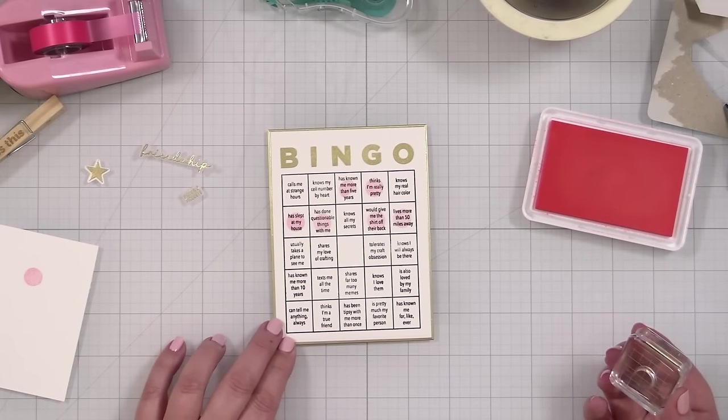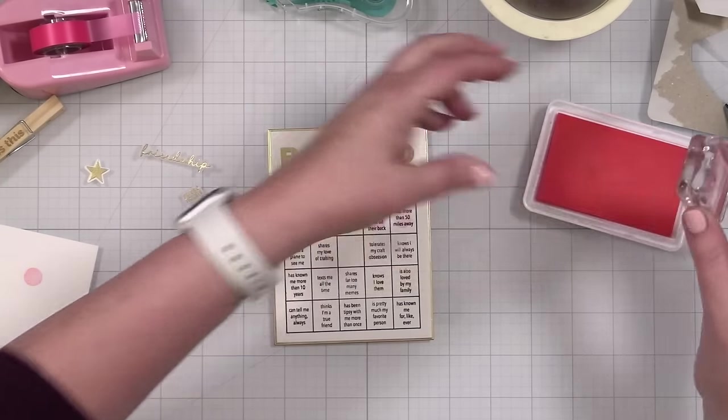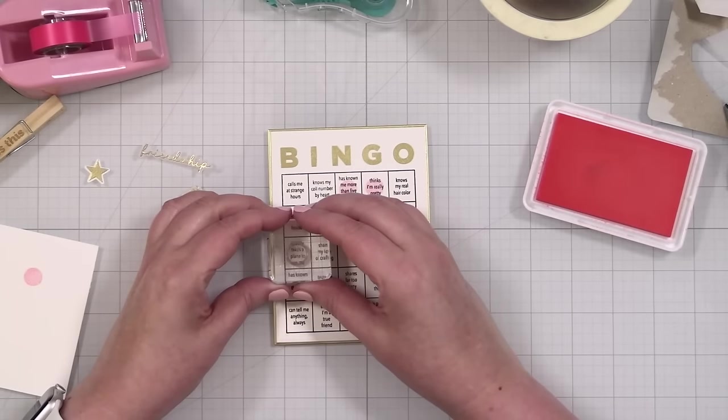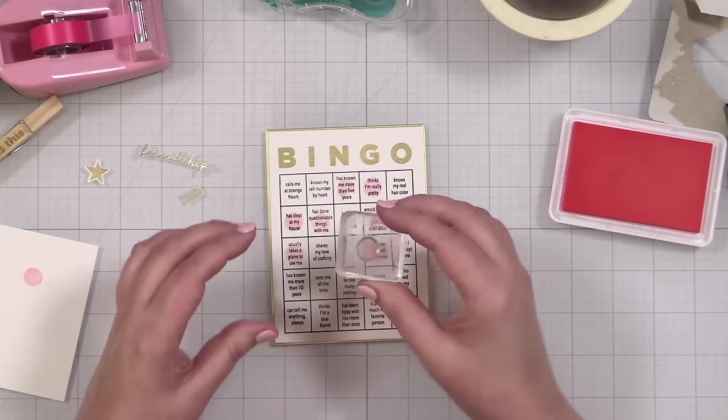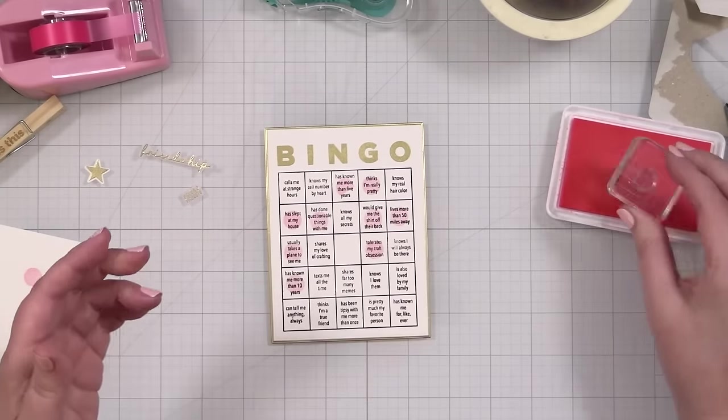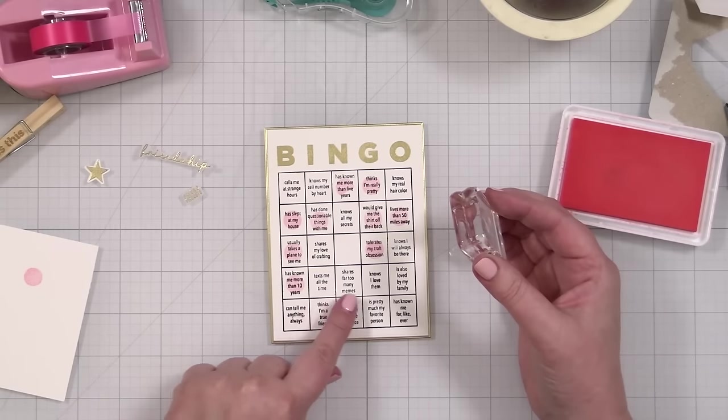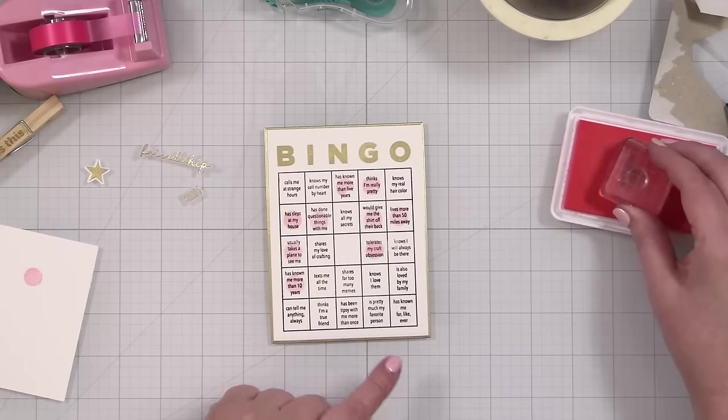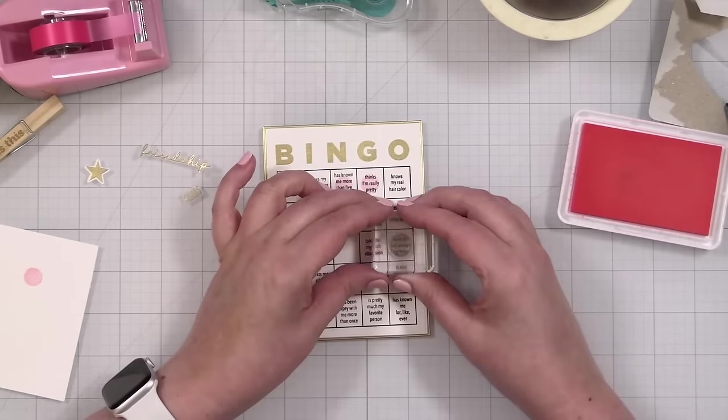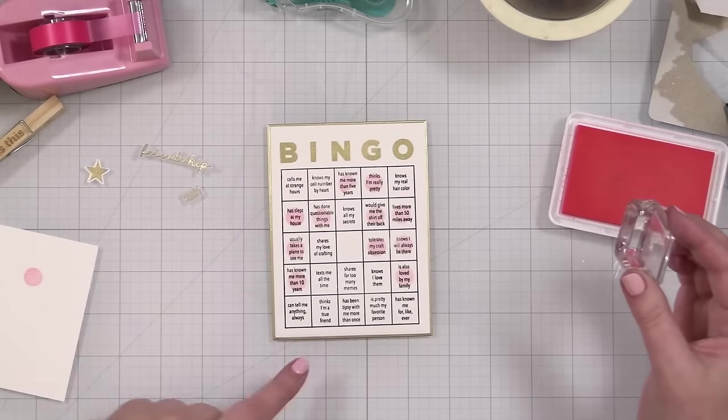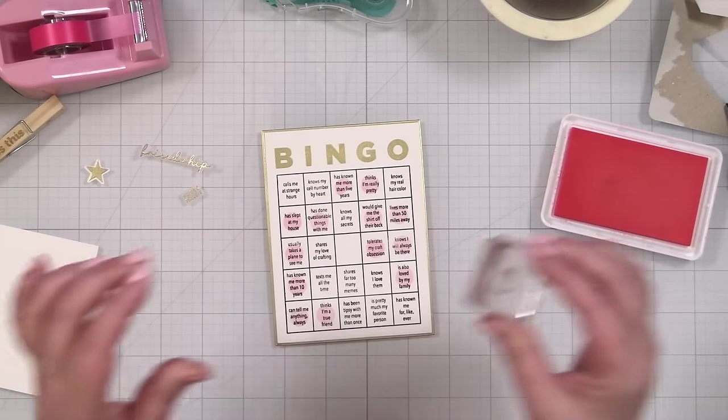Knows all my secrets. Probably not. I have some that I keep, you know, into myself. Would take, would give me the shirt off of their back. Indeed lives more than 50 miles away. A hundred percent. So you got, you kind of get the idea, right? But I like this having the pink and the gold. I think it's really cute. Usually takes a plane to see me. That is true.